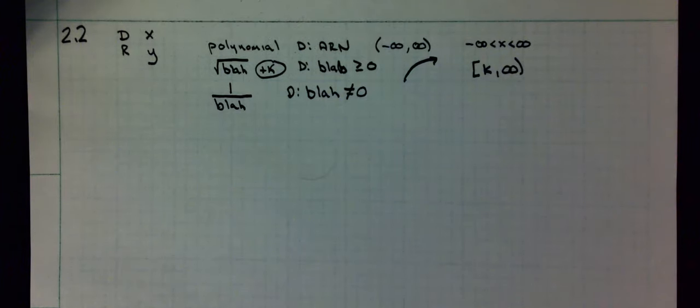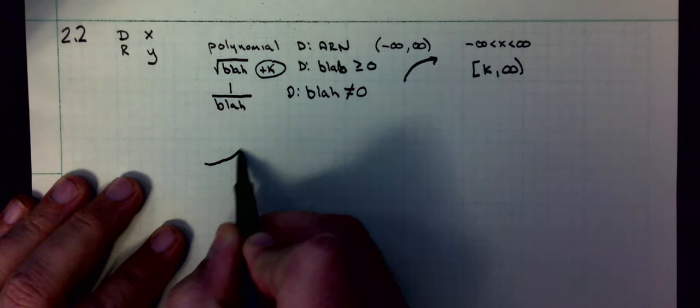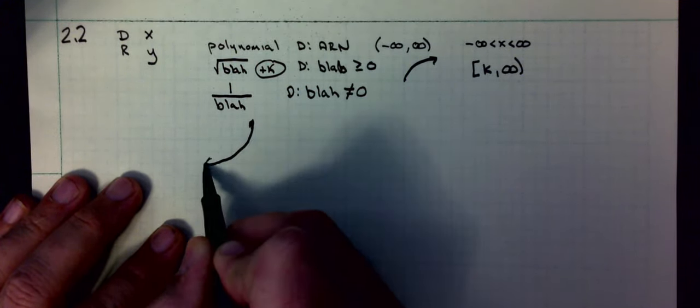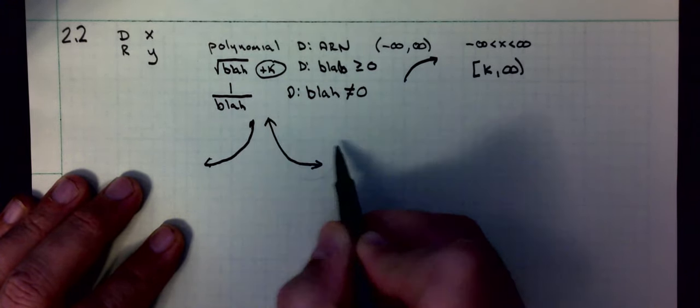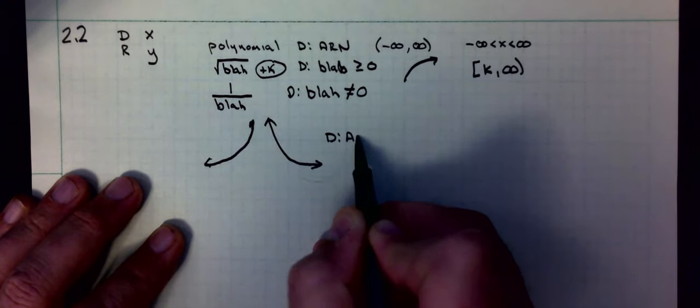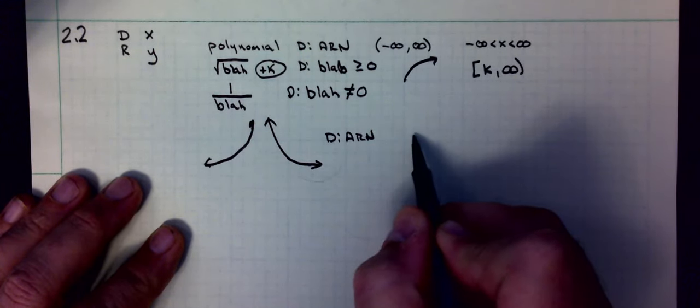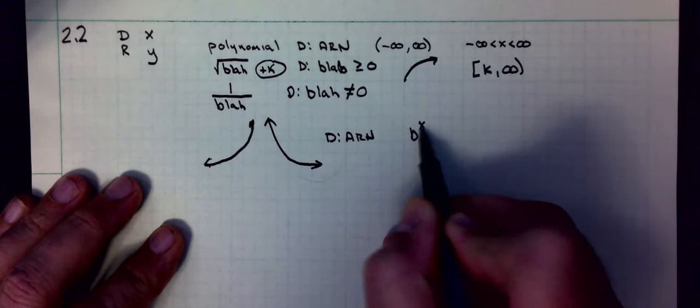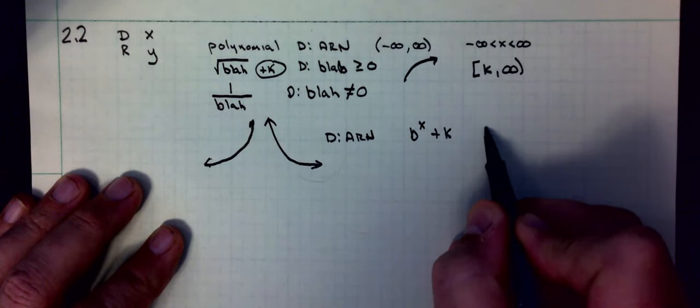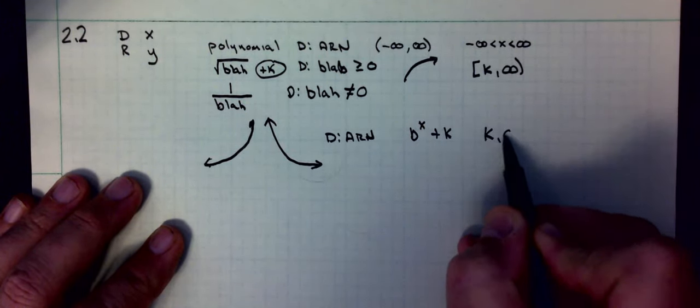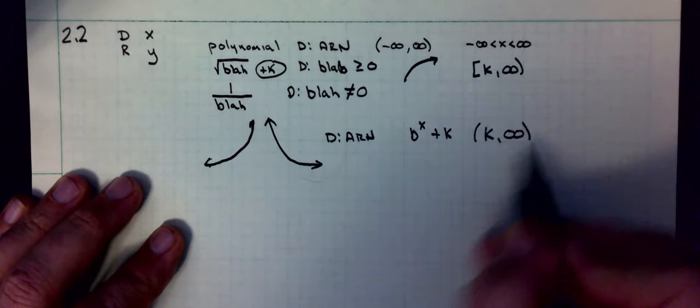Other functions that you should know about would be your exponential function, exponential increasing, exponential decreasing. The domain of these is all real numbers. And the range would be, for example, if I have b to the x, the range would again be k to infinity. But in this case, your k is a horizontal asymptote.